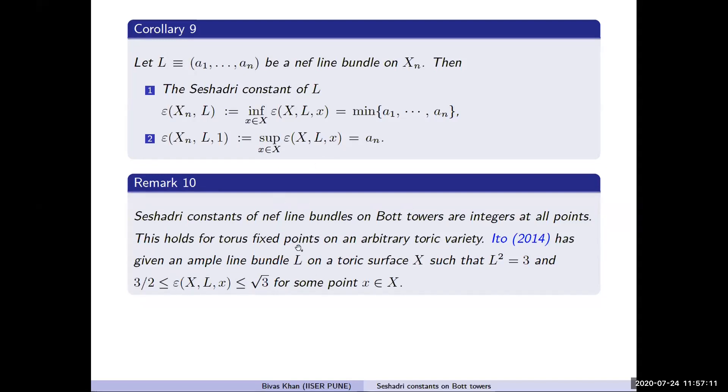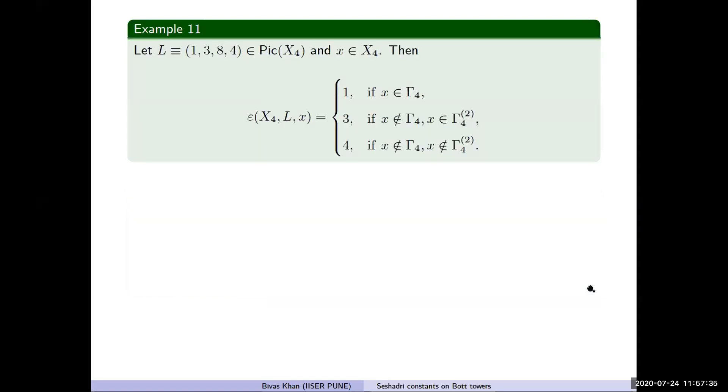One final remark is that so far all Seshadri constants on Bott towers are integers. More generally, this was true for torus fixed points on arbitrary toric varieties. However, there can be toric varieties with Seshadri constants that are rational. One example was given by Ito.